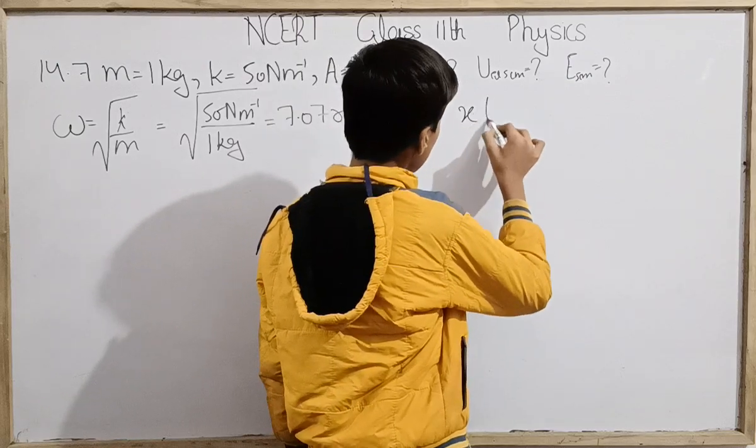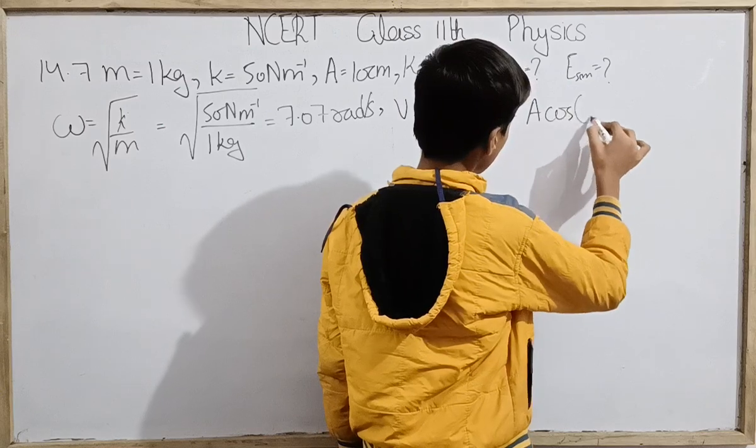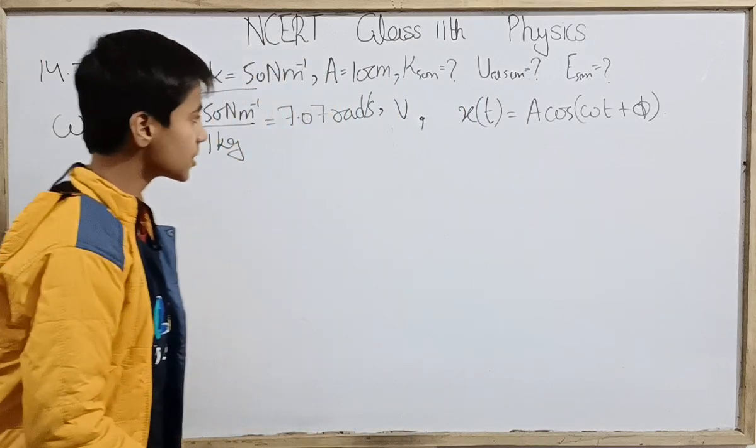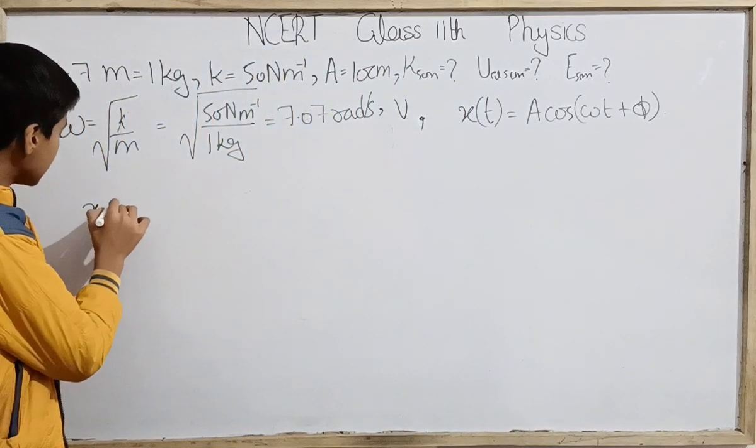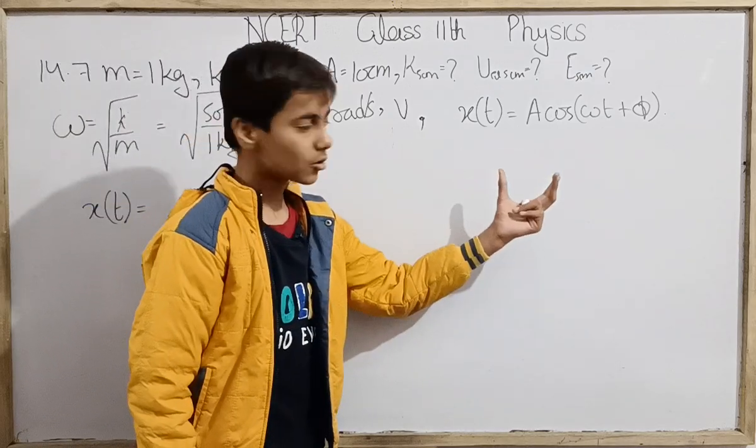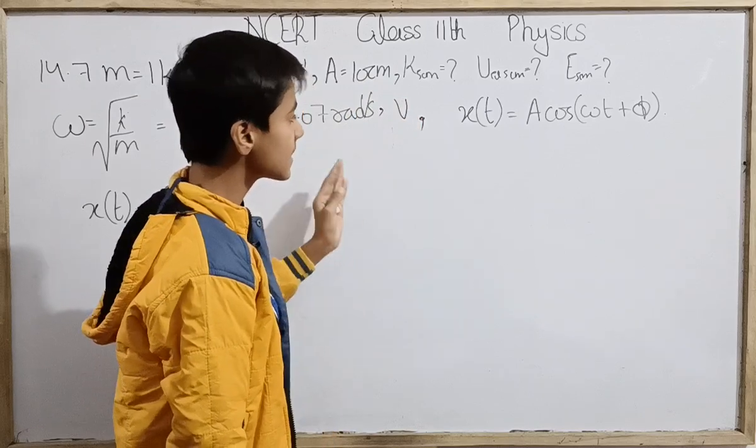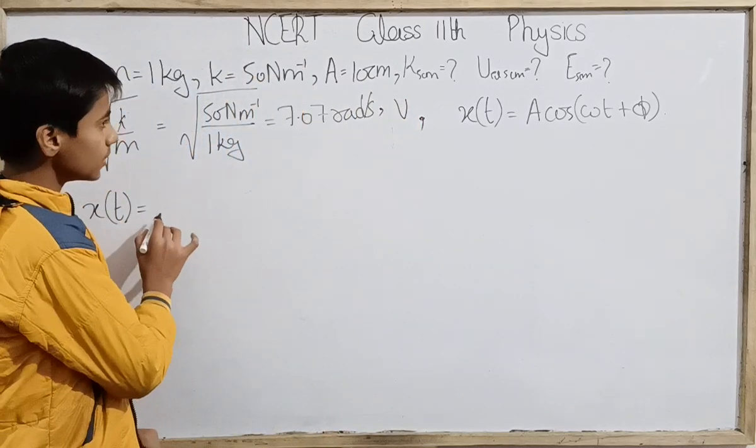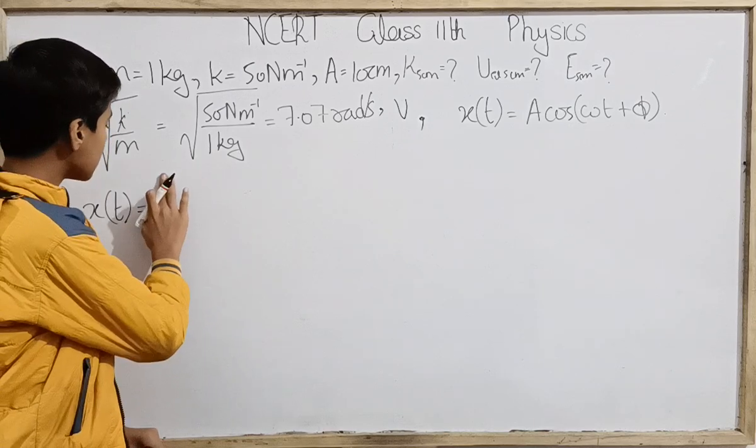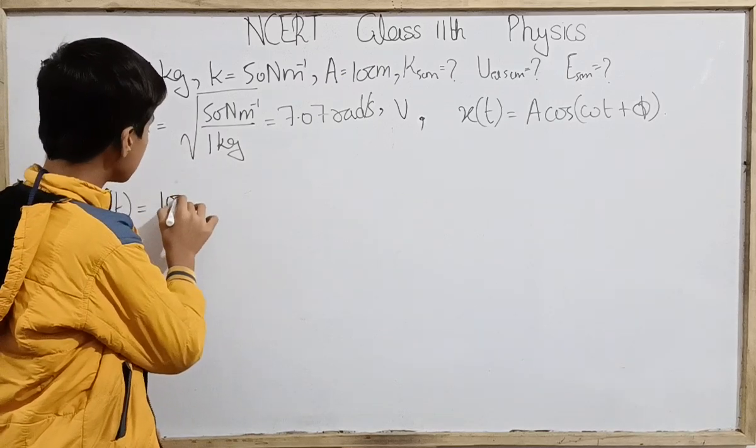As we know, x as a function of time is given as A cos(ωt + φ). Here phi will be zero, the initial phase angle. Why? Because at t equals 0 we have placed it at the maximum displacement amplitude. That is the case when phi is zero. A, the amplitude, we can put here as 10 cm, that is 0.1 meter.